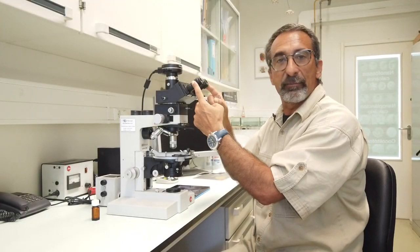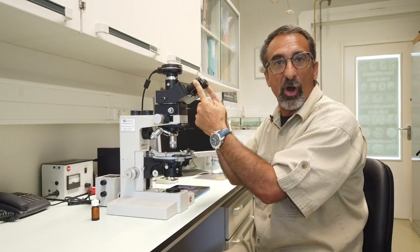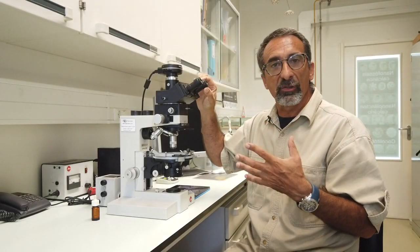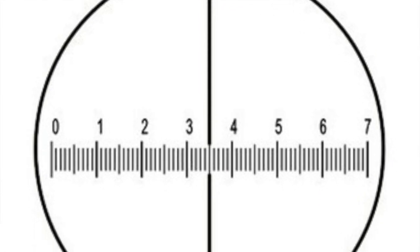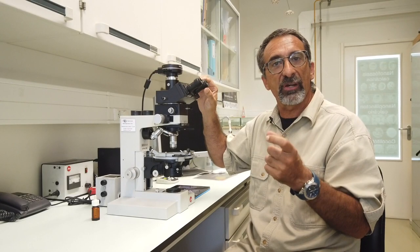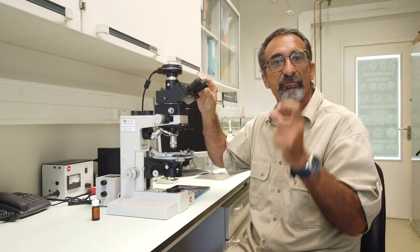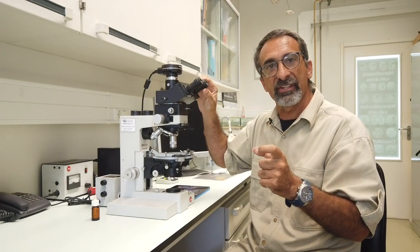And then we have the eyepieces. The eyepieces, the oculars, normally have a magnitude of 12.5 magnification. Normally in one of the oculars there's also a micrometer that helps to determine very fast measurements of our calcareous nanofossils.